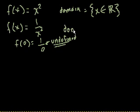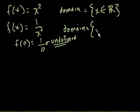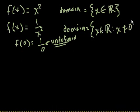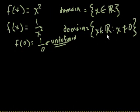So here we say the domain is the set — those curly brackets — where x is a member of the real numbers such that x does not equal 0. Before, when f of x equals x squared, x could be any real number. Now we're saying x is any real number except for 0.